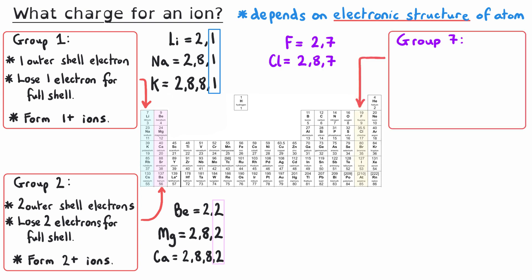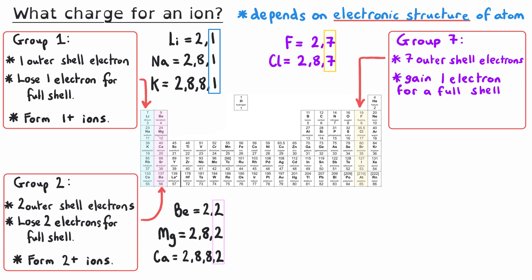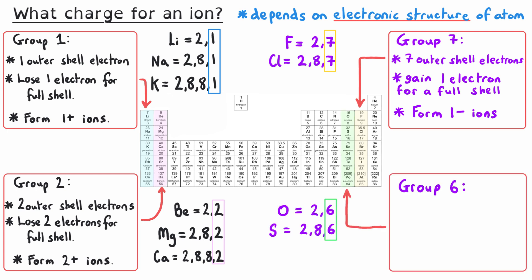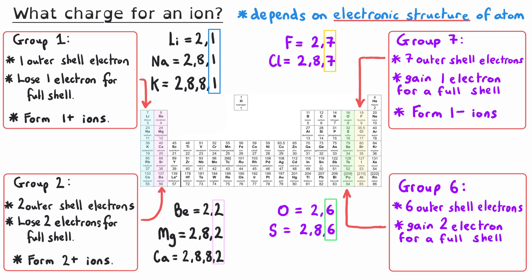Moving over to the non-metals on the right-hand side — for instance, group 7 — we can see the outer occupied electron shell is almost full. Fluorine has the electronic structure 2,7 and chlorine 2,8,7, so they both have seven electrons in their outer shell. To fill that outer shell, they gain one negative electron, which means they become 1− ions. Group 6 have six electrons in their outermost occupied shell, so they need to gain two negative electrons, meaning they become 2− ions.